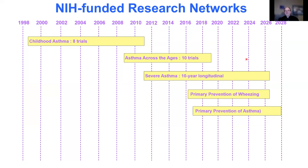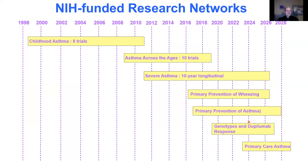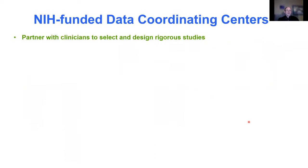What I'm going to talk about today has to do with primary prevention of childhood wheezing. We're also working on a primary prevention trial of asthma, right now here in the end of 2023. We're also working on a genotype and dupilumab response trial, and with Lan, we're just beginning a primary care asthma project which will go for another five or six years.